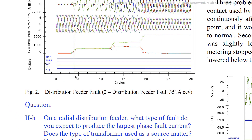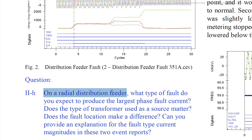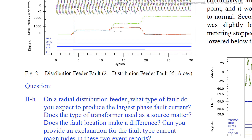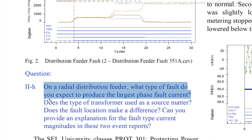The question asked is: on a radial distribution feeder, what type of fault do you expect to produce the largest phase fault current? That really depends on a lot of different factors — it boils down to the impedances. What are our positive, negative, and zero sequence impedances? That will drive the type of fault and the amount of fault current. The general rule of thumb is the higher the impedance, the lower the fault current, because it follows Ohm's law: current equals voltage over resistance.